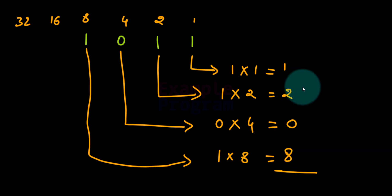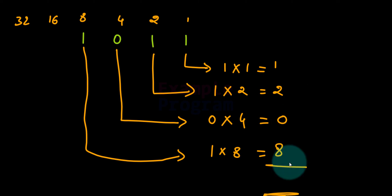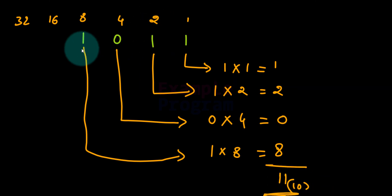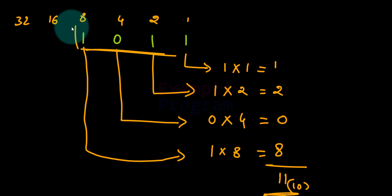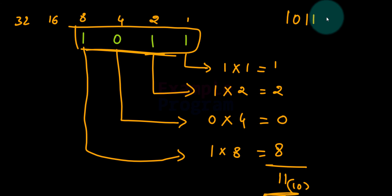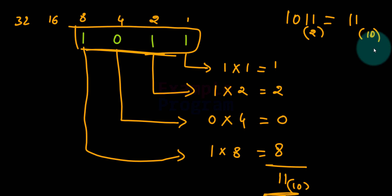Then we add all these values and we get a number. In this case we get 1 + 2 + 0 + 8 = 11, and this 11 is actually the decimal equivalent of the number in binary. So 1011 in binary is equal to 11 in decimal number system. This is how we can convert a number from binary number system to its decimal equivalent.